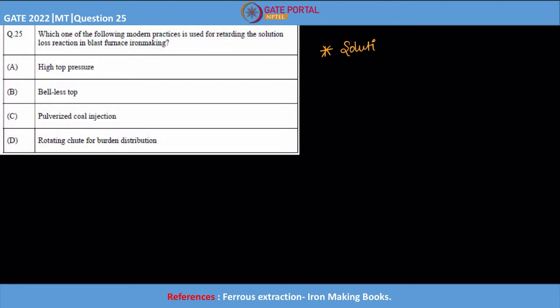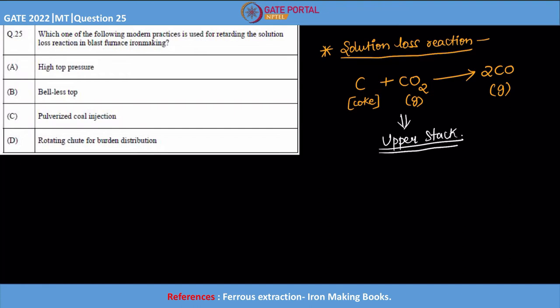let us try to understand what is the solution loss reaction. Solution loss reaction means that whatever carbon or coke that we charge, if it is reacting with CO2 when it is coming up, it will be forming 2CO. This is gas, this is gas. If this particular reaction is taking place in the upper stack region, the topmost region of the blast furnace...